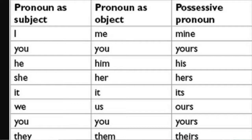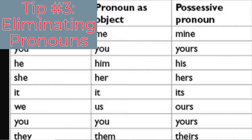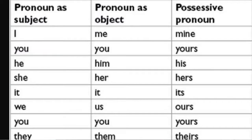The third tip to improve your writing is eliminating pronouns. As you see on the screen here, I've got a list of various types of pronouns. One of the things that you need to start eliminating is using especially things like I, you, he, she, they, them.